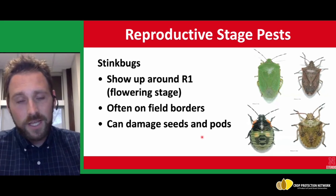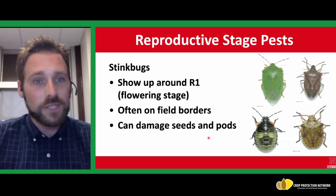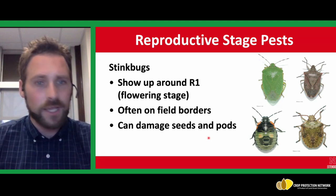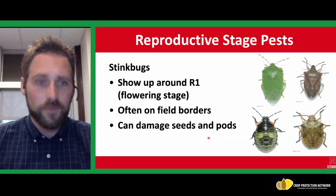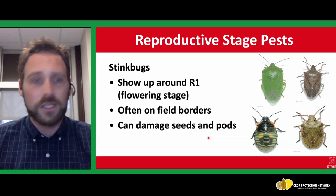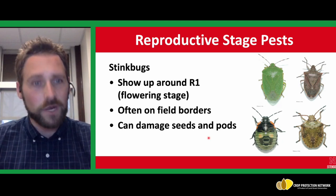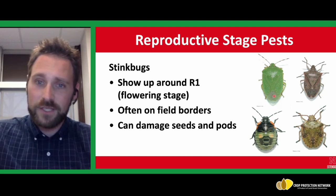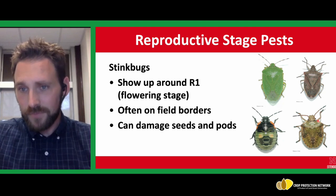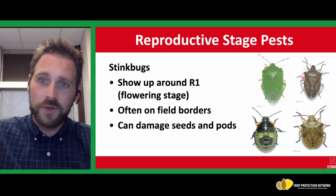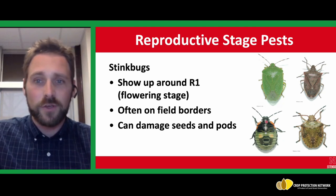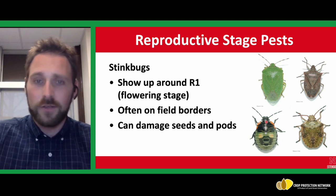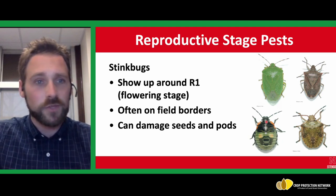One other one to mention is stink bugs. You may run across a number of different species. They show up around the R1 stage — that's when they become attracted to soybeans at the flowering stage — often along field borders. They have piercing, sucking mouthparts, so they'll feed and damage the seeds in pods. There are some good thresholds being established for this insect. You can see lots of variation within a species — the immature stage can look a lot different in each one. If you're carrying your sweep net, you're likely to pick these up, and it's good to bring them back for further clarification on what species it is.